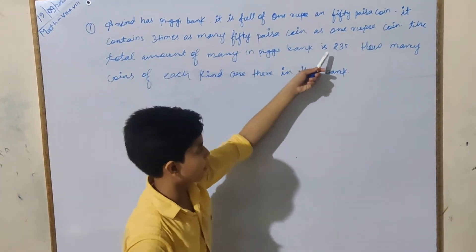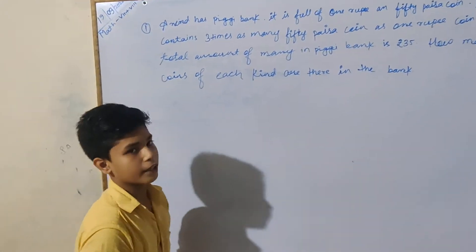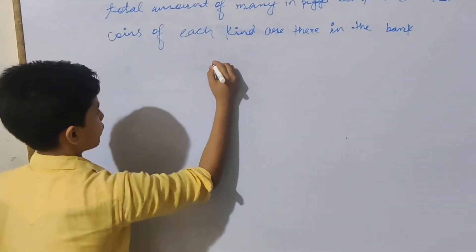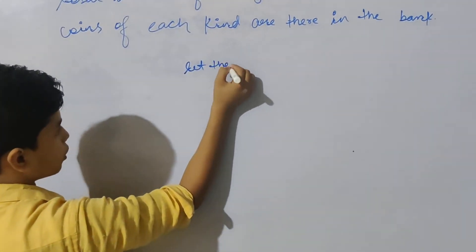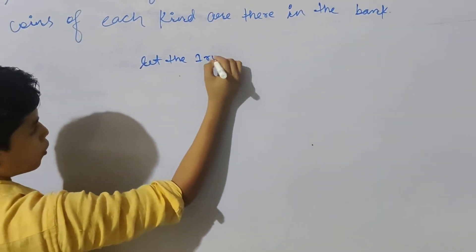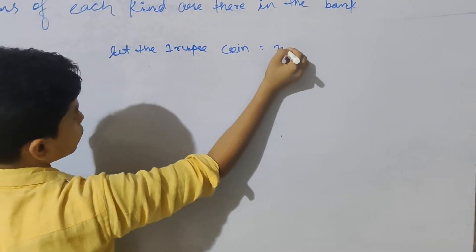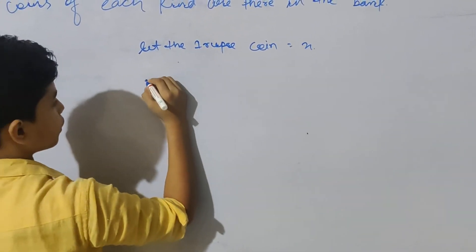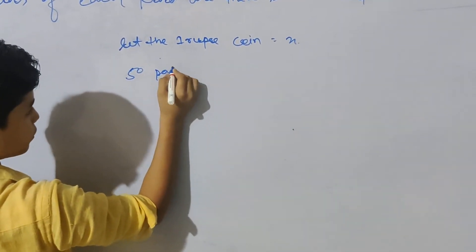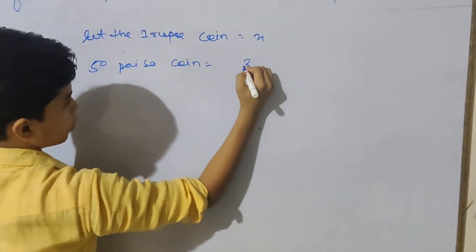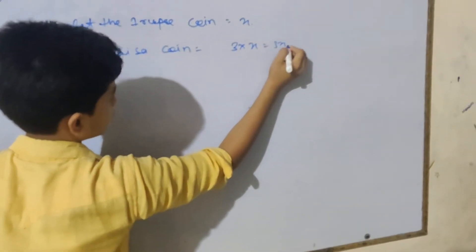The amount of money is where? So I will tell you how much is 1 rupee and 50 paisa coin. Let the 1 rupee coins equal x, and 50 paisa coins equal 3x.